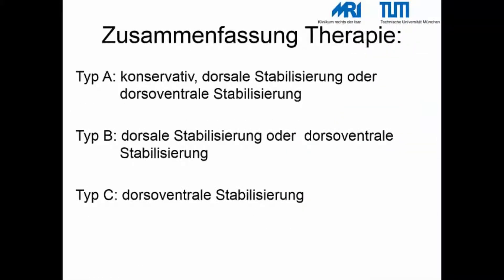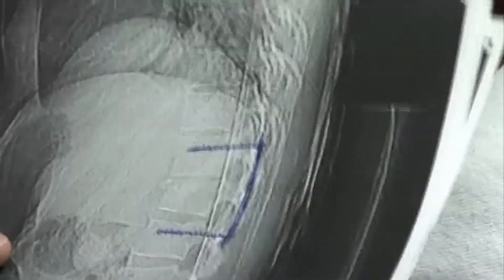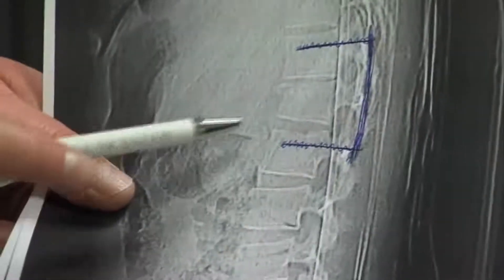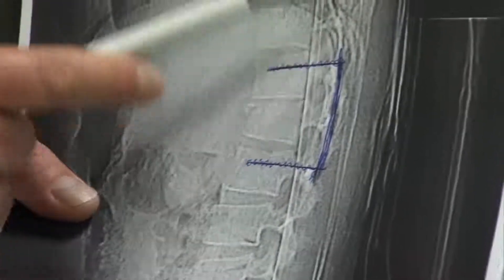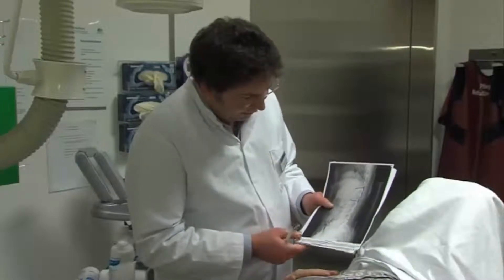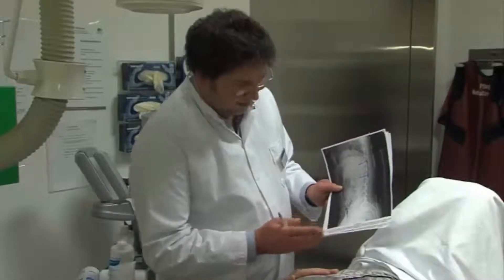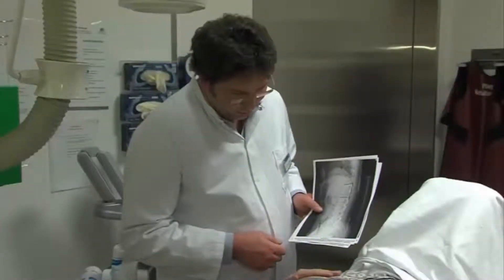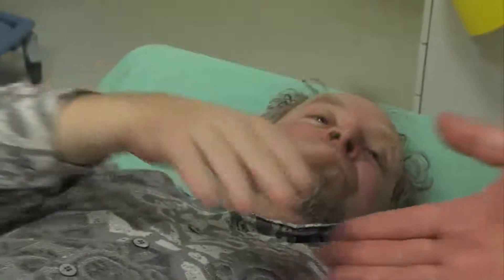Zusammenfassung: Typ A Verletzungen lassen sich konservativ oder mittels dorsaler Stabilisierung versorgen. Typ B Verletzungen erfordern häufig die dorsale und dorso-ventrale Stabilisierung, und Typ C Verletzungen immer die dorso-ventrale Kombinationsversorgung. Herr Vogel, wir empfehlen eine Operation: man bringt von hinten ein spezielles Gestänge ein – einen Fixateur interne – mit dem man den Bruch wieder aufrichten und in Stellung halten kann. Nach 8 bis 10 Monaten kann das wieder entfernt werden. Wir planen das für morgen.